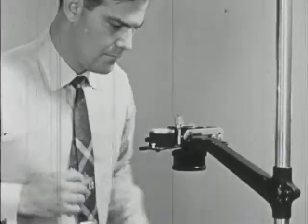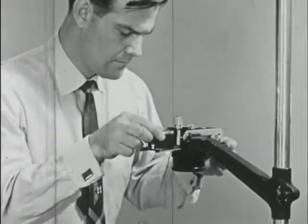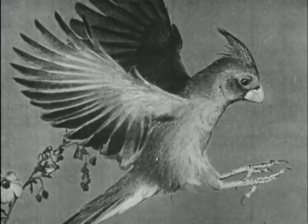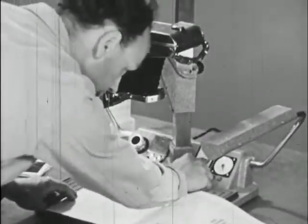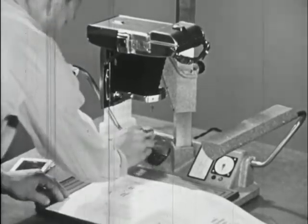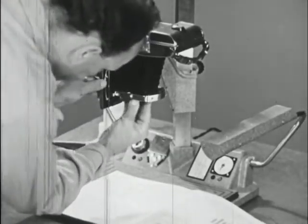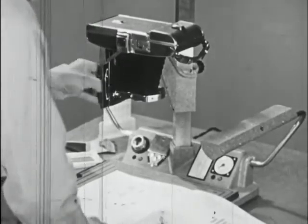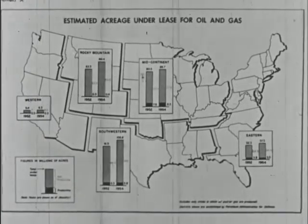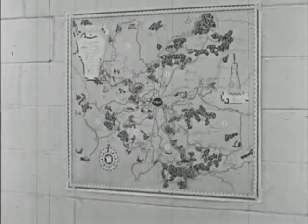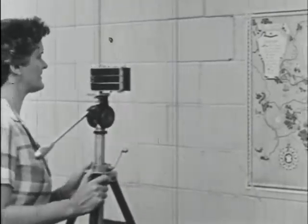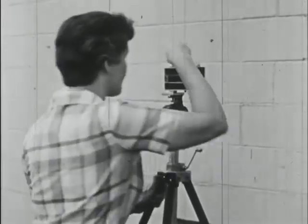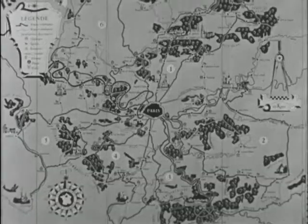By using your equipment properly and following instructions carefully, you can make good slides. If you need a transparency in a hurry, copies can be made in a matter of minutes using the process that makes a positive transparency in the camera. Daylight is an excellent light source for copying. If you are making colored copies, be sure to use daylight type film. A tripod provides a steady support for the camera while you make the exposure.